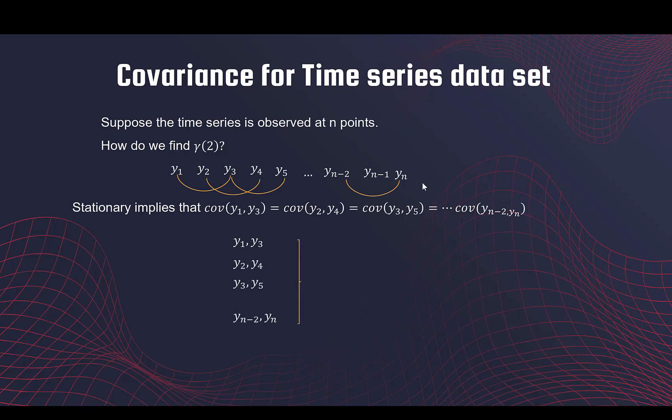Now I'm going to pretend like this is a multivariate data set where I have n minus two observations on two variables. Again, this is not a typical multivariate data set because all of these are not independent or identically distributed.